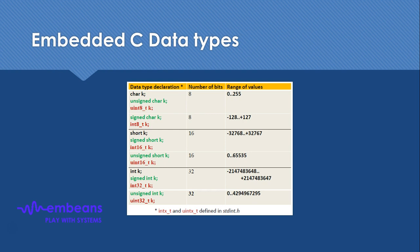Signed or unsigned actually defines whether the variable is going to hold only positive values or both negative and positive values together. If you declare a variable as signed, that means it can hold values from the negative range to the positive range. Like for an 8-bit variable it can hold a value of minus 128 to plus 127. But if you declare that variable as unsigned, the compiler will treat it such that it will only hold positive values. If you give it any negative value it will hold 0.